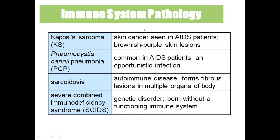Kaposi's sarcoma is skin cancer seen in AIDS patients — you can see brownish-purple skin lesions. Pneumocystis carinii pneumonia is very common in AIDS patients and is an opportunistic infection. Sarcoidosis is an autoimmune disease which forms fibrous lesions in multiple organs of the body.